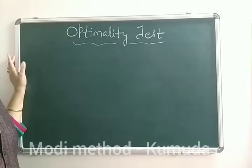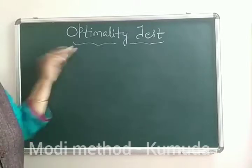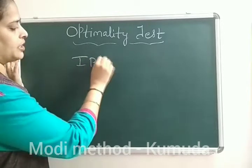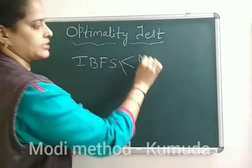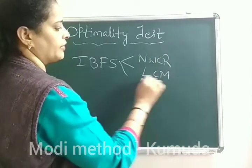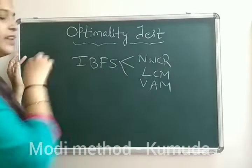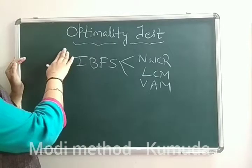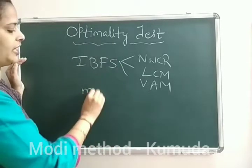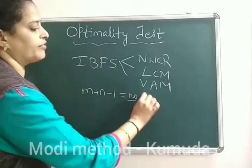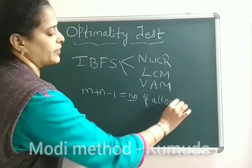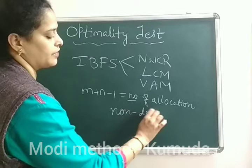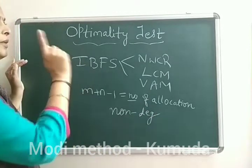Today let us learn about the optimality test. The optimality condition or optimality test can be applied to any IBFS — Initial Basic Feasible Solution — which can be found using any of the methods like NWCR, LCM, or VAM. Once we have found the IBFS, we can test for optimality, but it has to satisfy the condition that M plus N minus 1 should equal the number of allocations. That means the solution obtained has to be a non-degenerate solution before we can apply the optimality test.